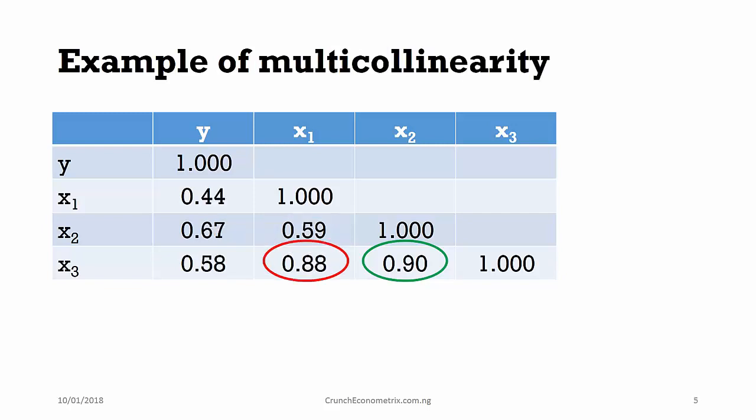The next example is that of multicollinearity. Here we can see that the third regressor exhibits a 0.88 collinearity with the first regressor and a 0.90 collinearity with the second regressor.